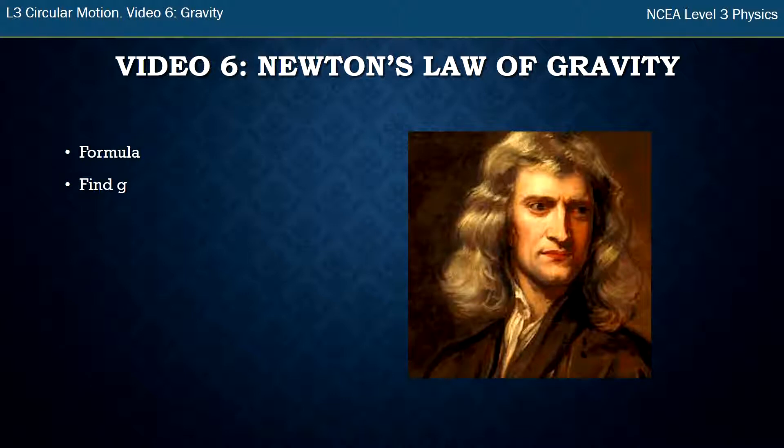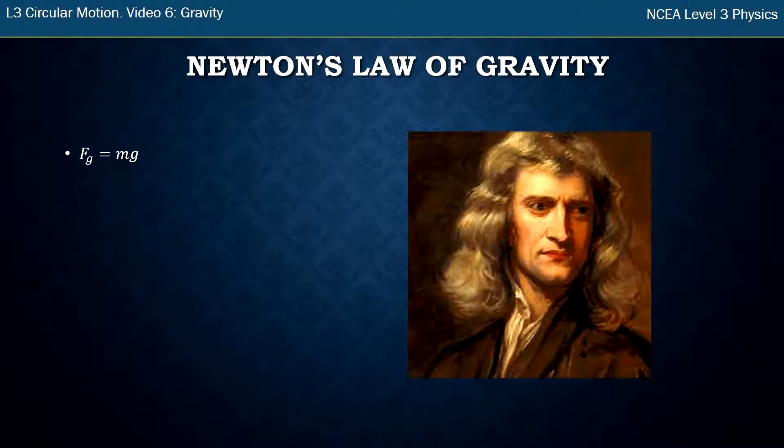Newton's law of gravity that you've been using up until this point is F_g, the force of gravity, equals mass times little g, which is your gravitational field strength, which on Earth is 9.8 or 9.81. We've been using this. Now, this is just an approximation, which means it's a simplification of real life.